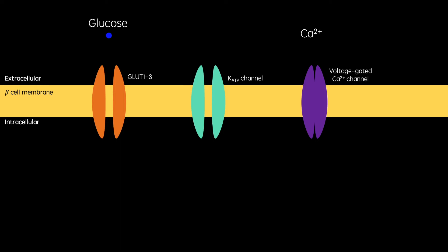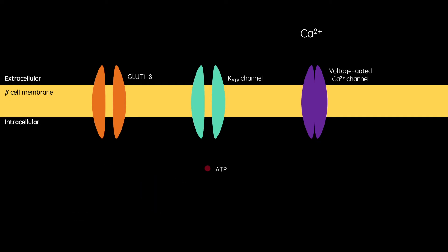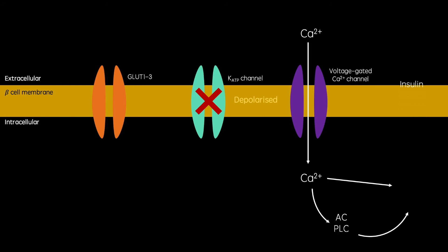When blood glucose concentration is elevated after a meal, glucose enters beta cells via glucose transporters. It then gets metabolized by glycolysis, the TCA cycle, and oxidative phosphorylation, producing ATP. This ATP binds to and blocks ATP-dependent potassium channels. This channel usually mediates a constant potassium efflux, maintaining the cell's membrane potential. So when this is blocked, the cell becomes depolarized. This causes voltage-gated calcium channels to open, facilitating a calcium influx. This calcium works both directly and via secondary enzymes to stimulate the exocytotic release of insulin. This is the process of glucose-dependent insulin secretion.